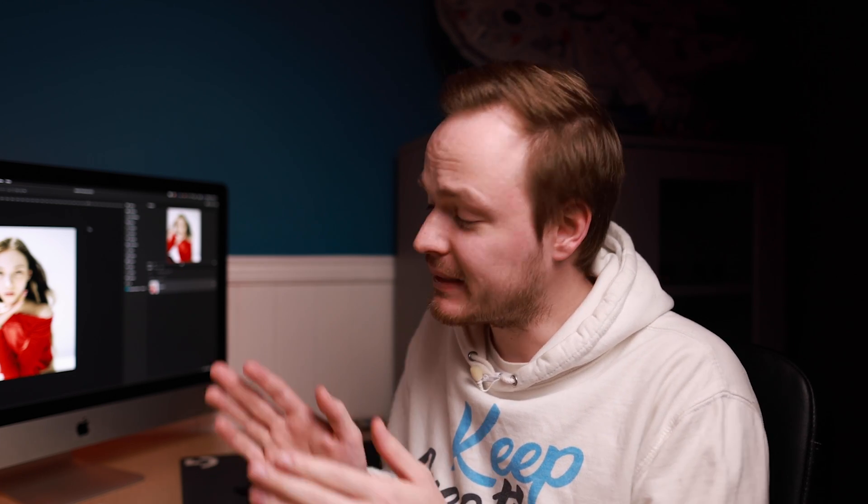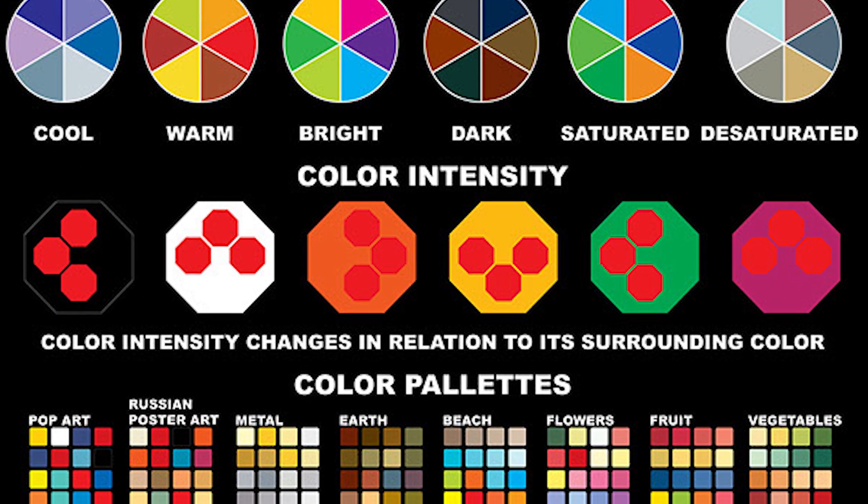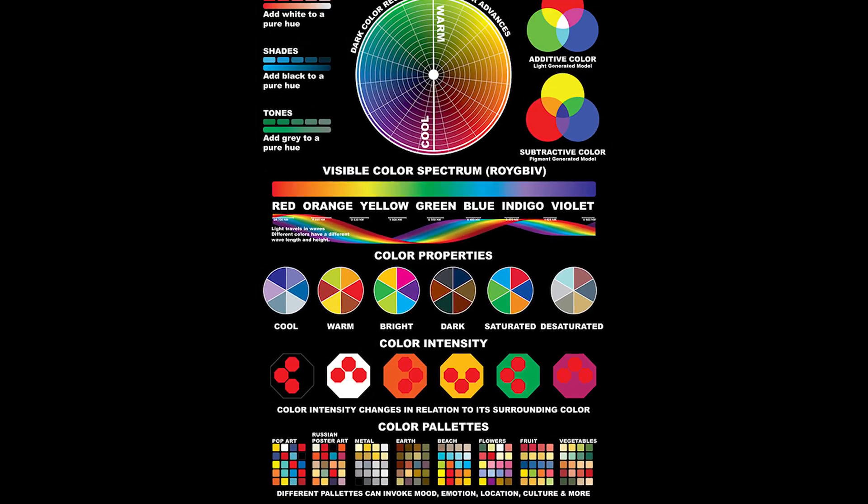Washed out skin tones can happen for a variety of reasons — either you've shot in poor or bad lighting. But in this particular case it's to do with the red of the top. Often colors can look under saturated if they are next to another saturated object, and here the bright red top is making the skin tones look under saturated.